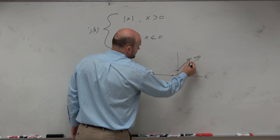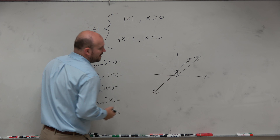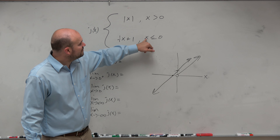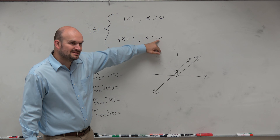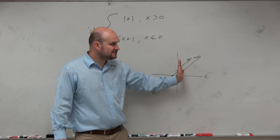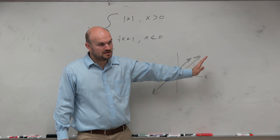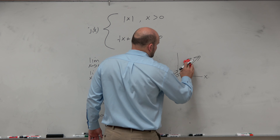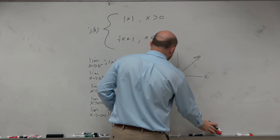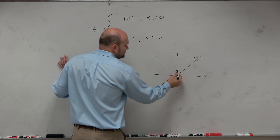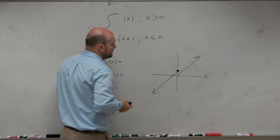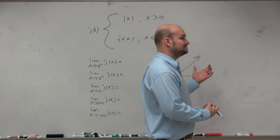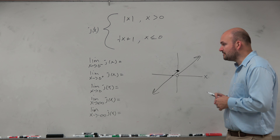Now, the piecewise function has constraints. It says only do this function — only is this function valid — for when x is greater than 0. So here's your x-axis. When is x greater than 0? It's basically any number to the right of the y-axis. So everything to the left is not part of this piecewise function, so we're just going to erase it. It's x is greater than 0.